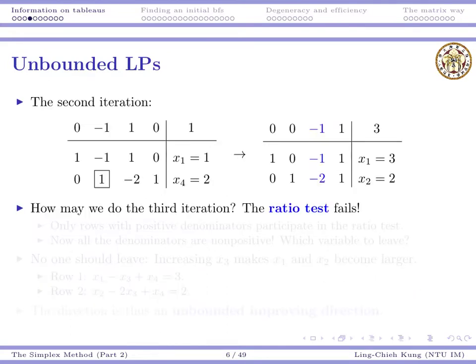From the second tableau, we can see there is another negative reduced cost, so x2 should enter. The negative number does not compete in the ratio test, so the second ratio is the only one and we do one more iteration to get a third tableau. At this point, if we want to run one more iteration we should enter x3, but in this case there is nothing we can do for the ratio test — all the numbers in the entering column are negative.